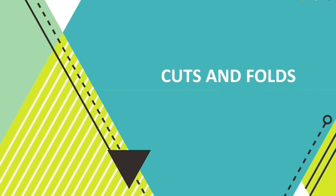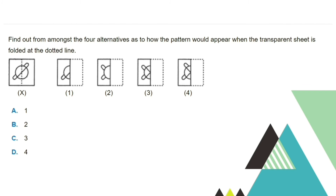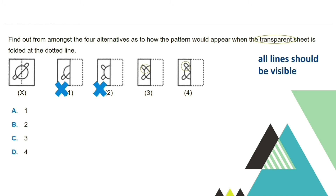We will now proceed to cuts and folds. Find out from amongst the four alternatives how the pattern should appear when the transparent sheet is folded at the dotted line. Since you are using a transparent sheet, all of the lines should be visible. Options 1 and 2 are obviously wrong. The difference between option 3 and 4 is that the ear-like shape is in different places. In the original figure, the ear-like shape is near the fold or crease. In option 4, the ear-like shape is nearer. So the answer must be option 4, which is letter D.